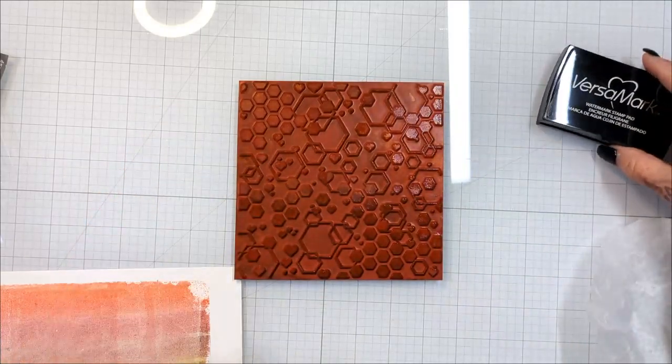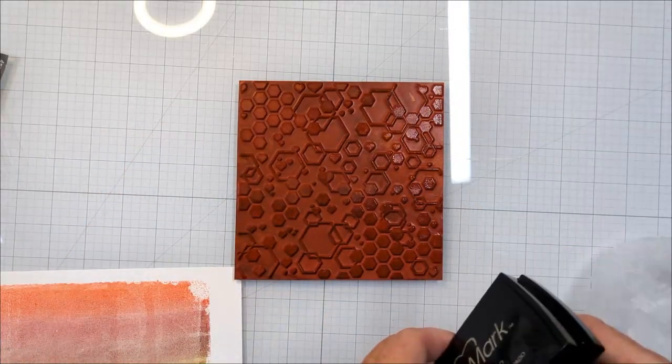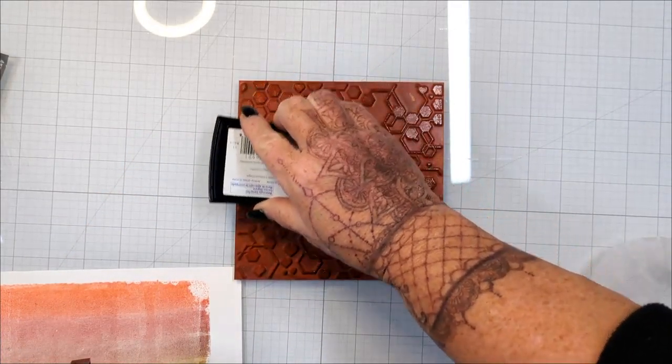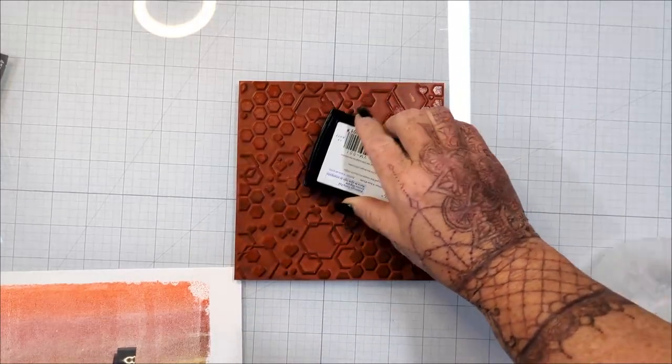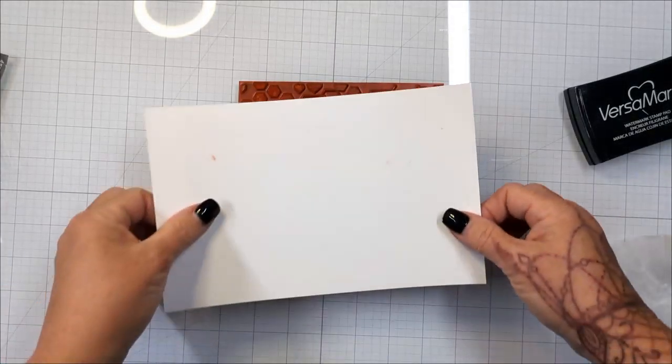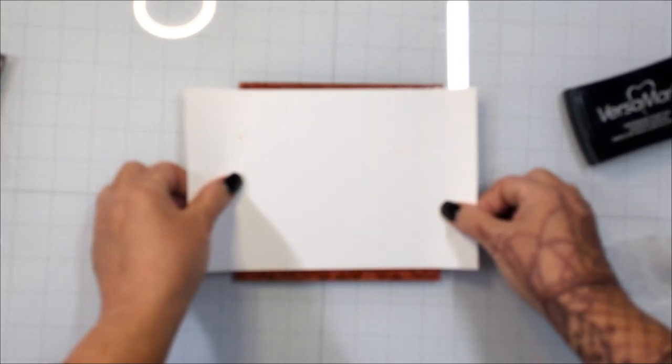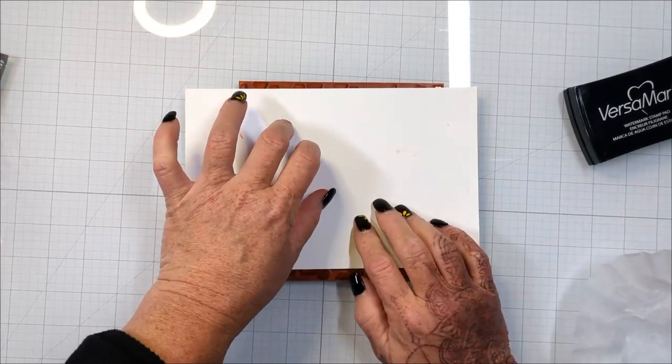And now I'm taking my 6x6 background stamp. This one is from Hero Arts. It's the sweet honeycomb. It's a couple years old. It has some different open honeycomb shapes and closed honeycomb shapes and even some stars in there. It's really sweet.